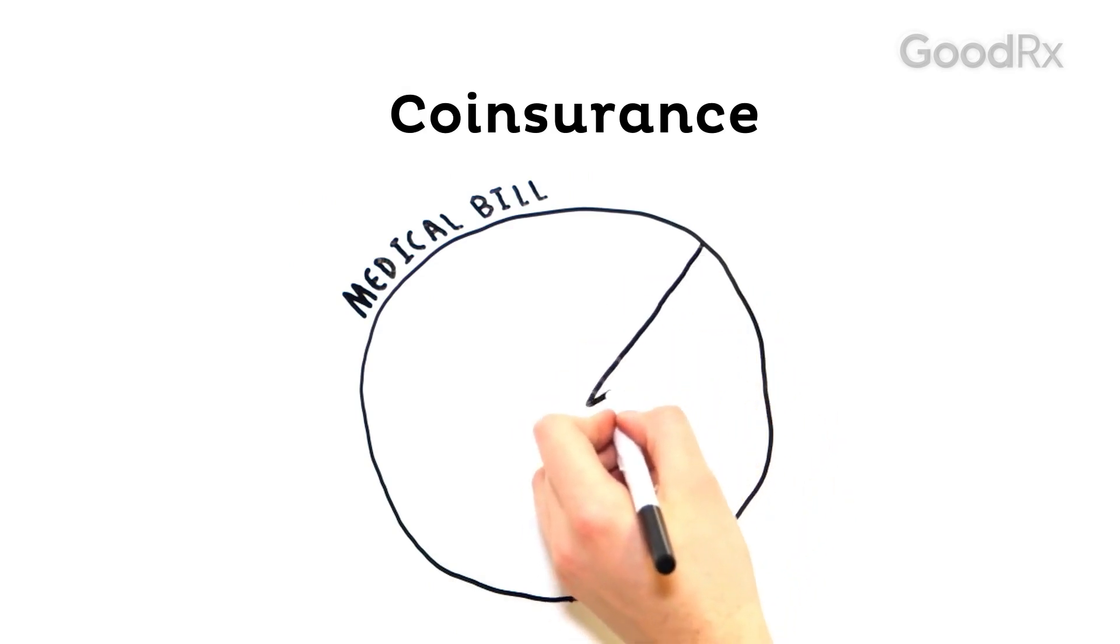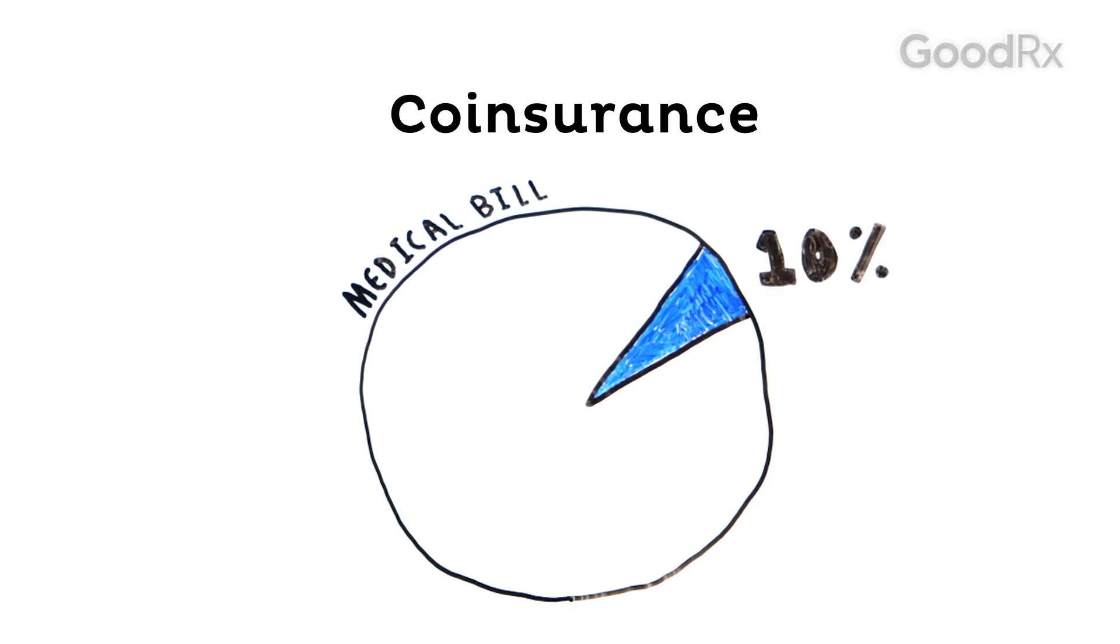Now, some insurance plans have something called co-insurance. Co-insurance is a percentage of the overall bill that is paid by you, or in this case, Jim, even after the deductible has been met. For this example, we'll say Jim's co-insurance is 10%.